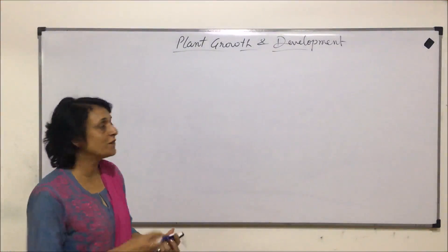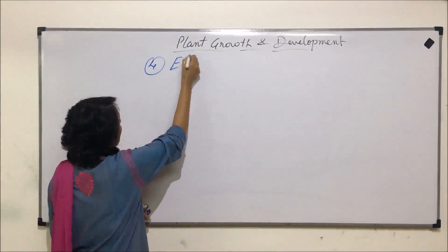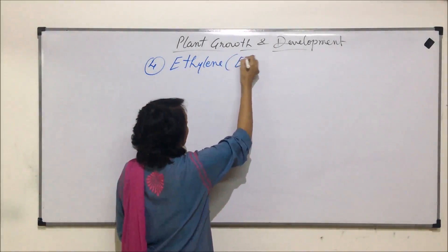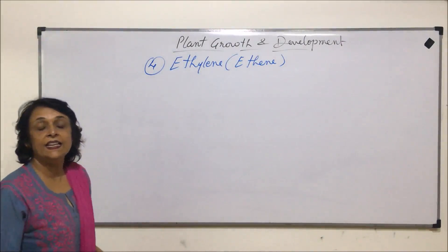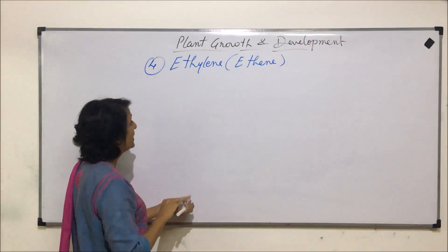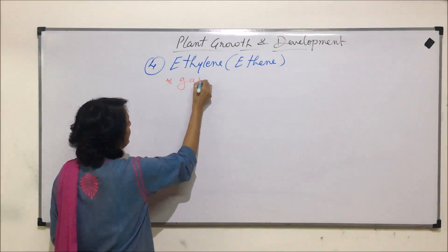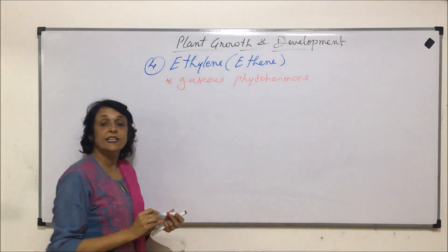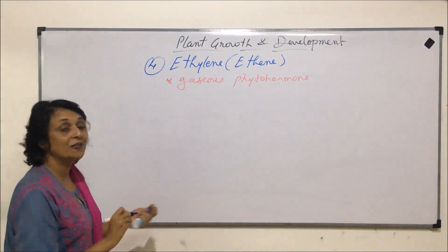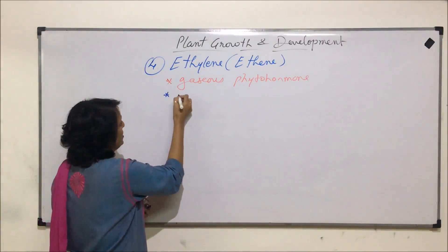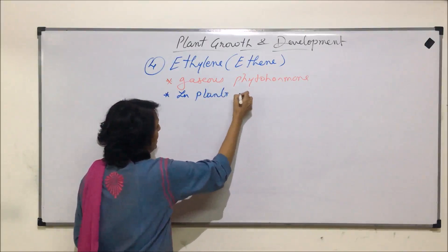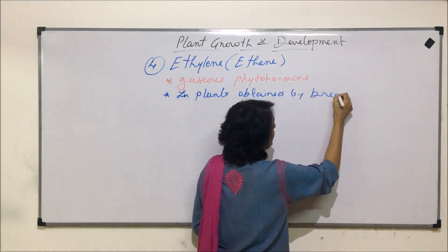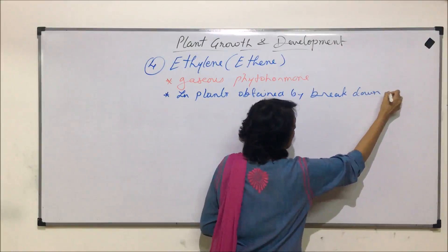We are now starting with the next phytohormone, ethylene — its IUPAC name is ethylene. This ethylene is a gaseous phytohormone, and in plants it is synthesized by the breakdown of methionine.